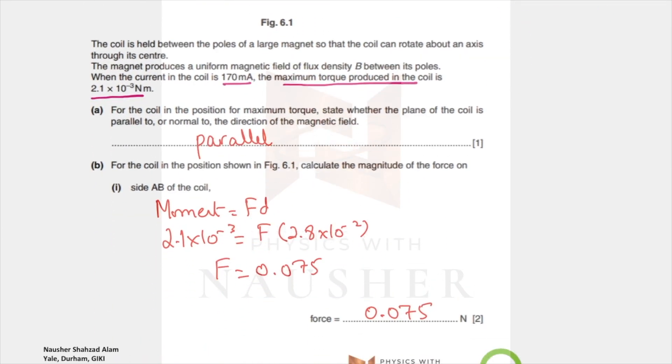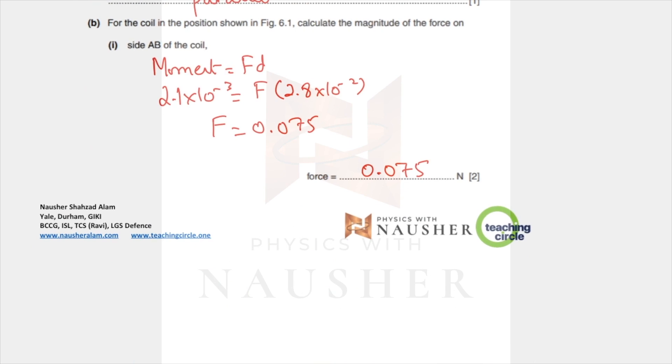Next part: for the coil in the maximum position, calculate the magnitude of the force. Moment equals force times distance, and the force turns out to be 0.075.